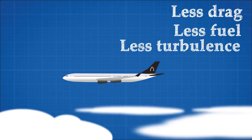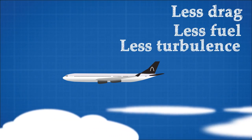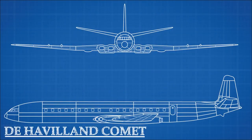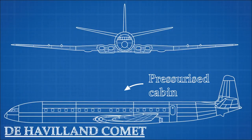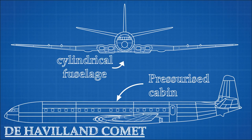But some design changes need to be made to allow this. First, the cabin has to be pressurised to create a survivable environment for the passengers. Second, the cabin must be cylindrical in shape, because a cylinder can resist the new internal pressure.